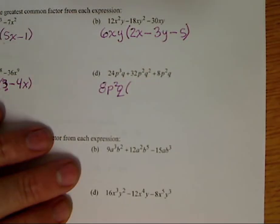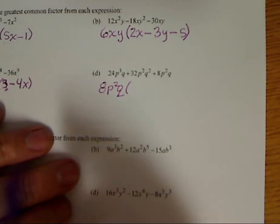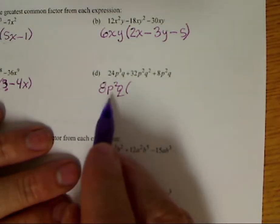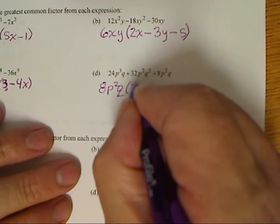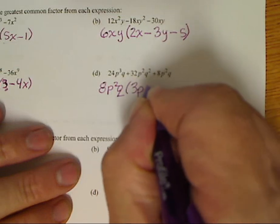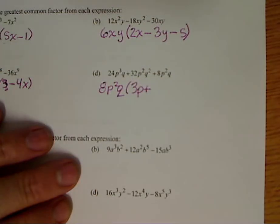Then I do 8 times 3 is 24. p squared times p, and I've already got my q's. So I need 3p for that first term. Then to get 32 out of 8 times 4, I already have my p squared. I need one more q.